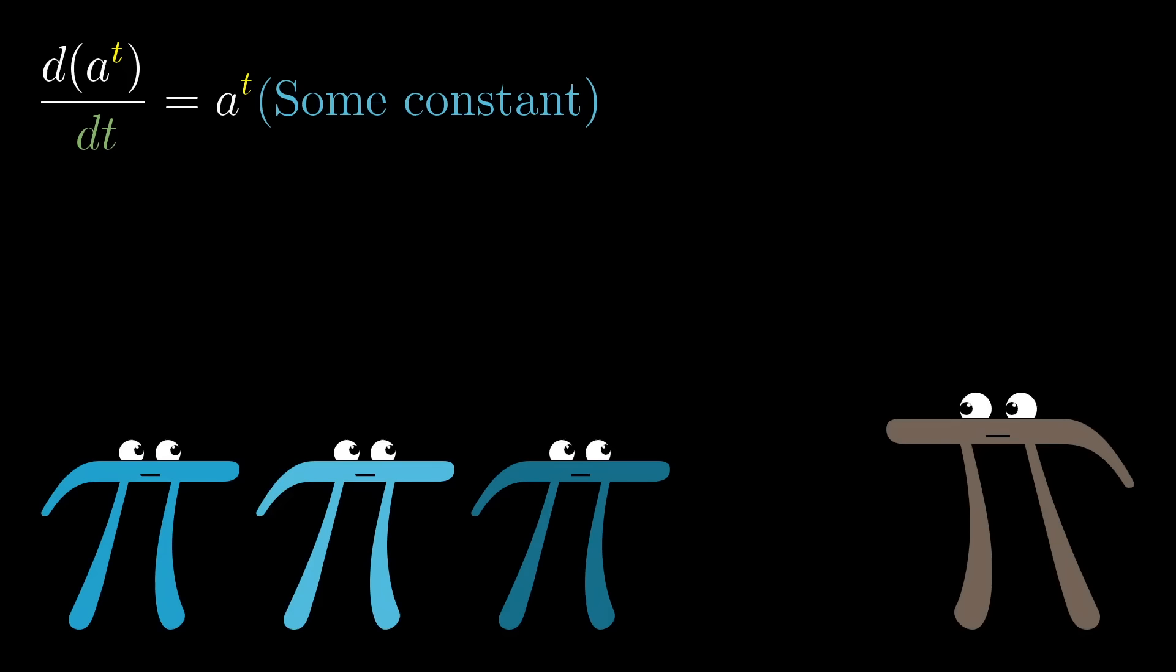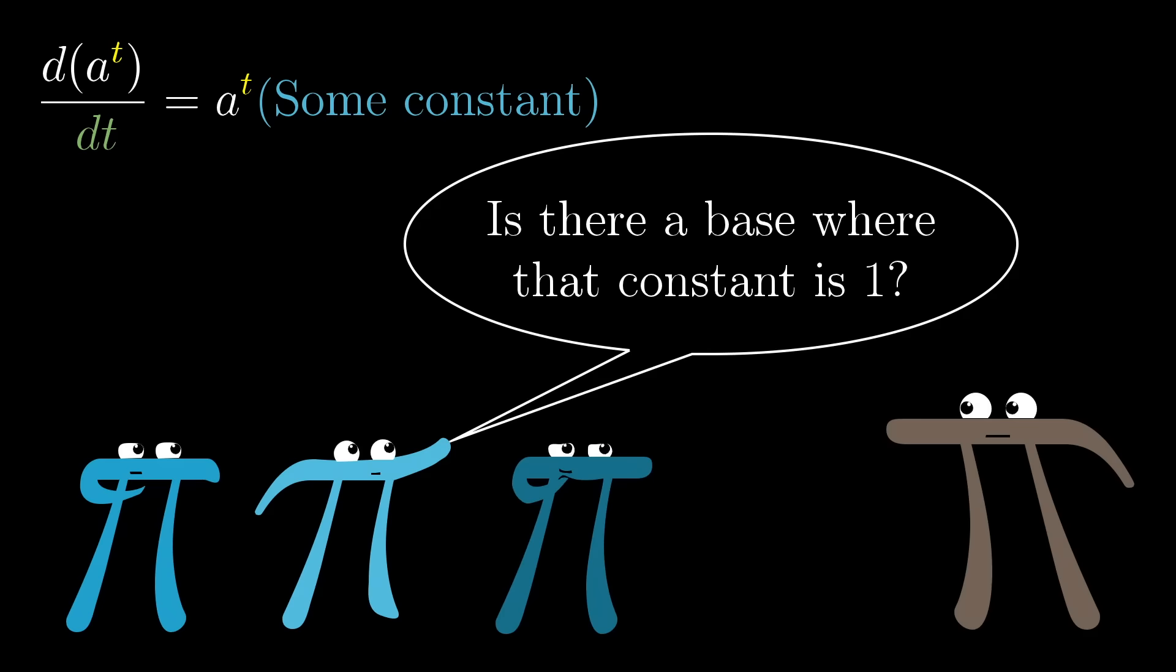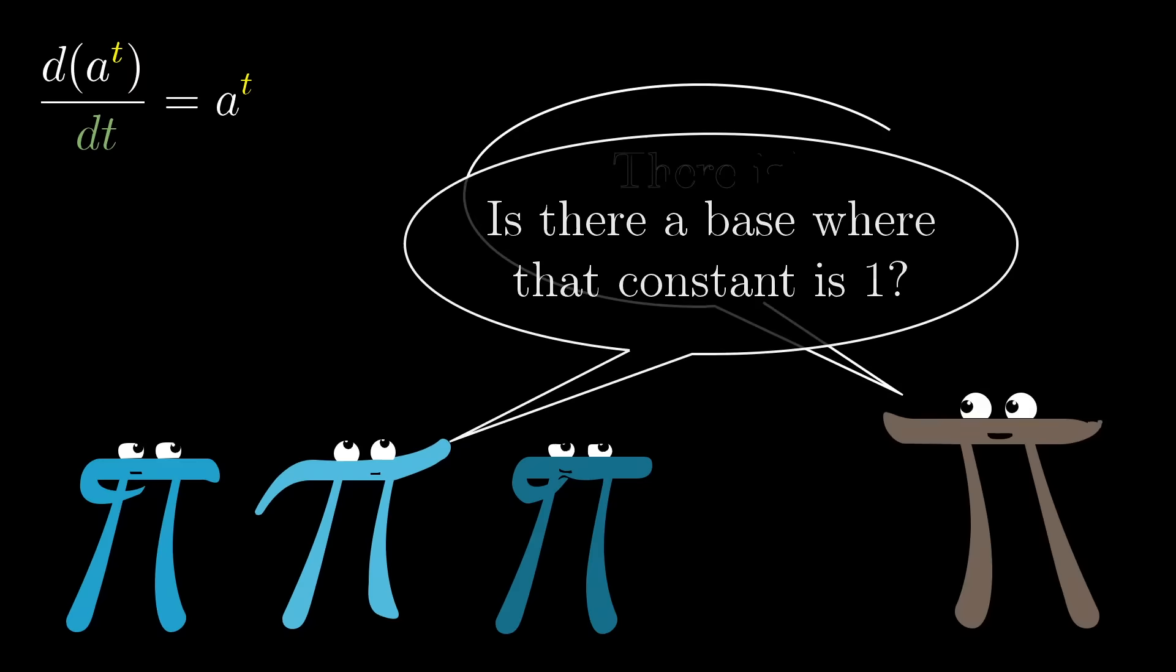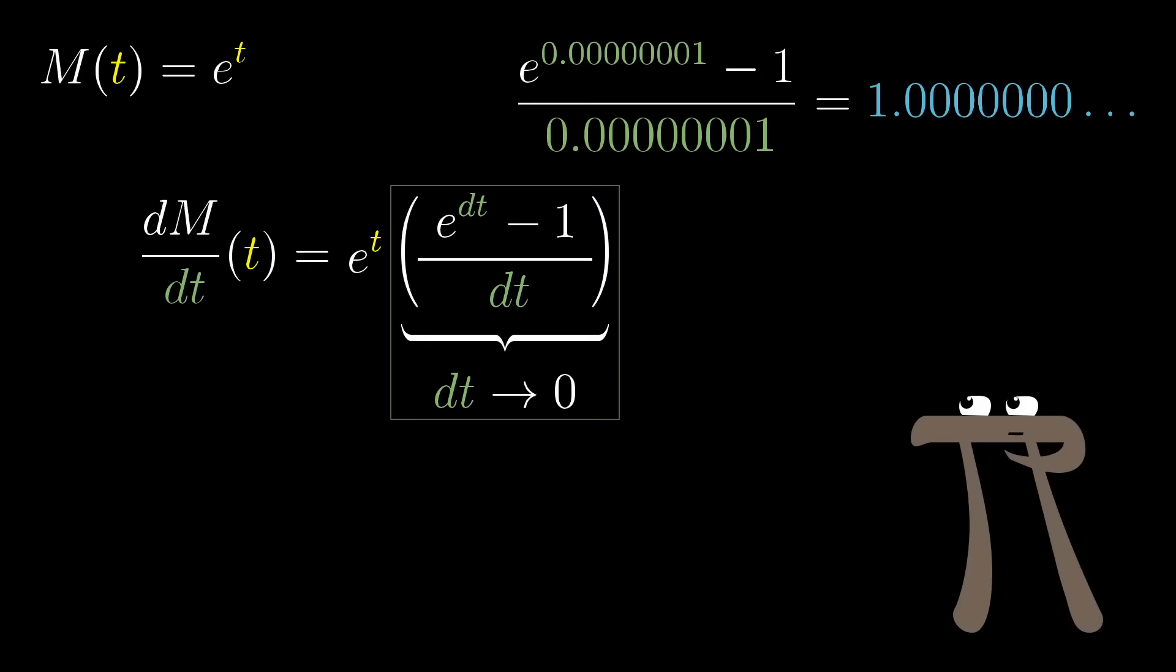Well, a second question that is ultimately going to explain these mystery constants is whether there's some base where that proportionality constant is 1, where the derivative of a to the power t is not just proportional to itself, but actually equal to itself. And there is! It's the special constant e around 2.71828. In fact, it's not just that the number e happens to show up here, this is, in a sense, what defines the number e.